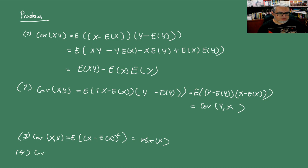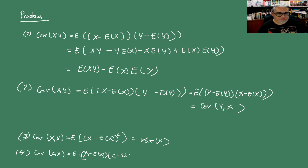Propiedad 4: Cov(c, X) = E[(X − E[X])(c − E[c])]. Como E[c] = c, el término (c − c) se anula, y por tanto la covarianza es cero.